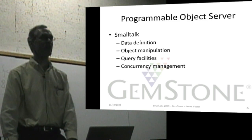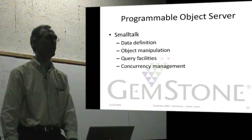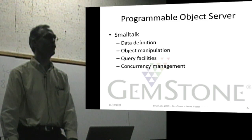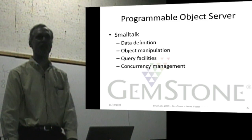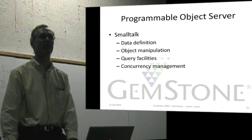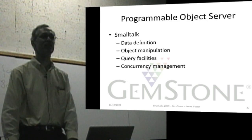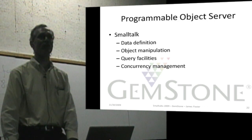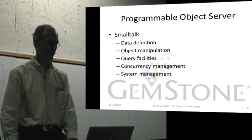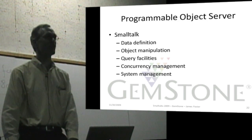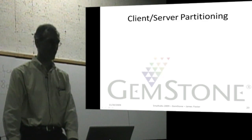For concurrency management, Smalltalk methods are available in the system to query who owns the lock, what other sessions are logged in, and who is logged in as a particular session. System management includes doing backups and other things.